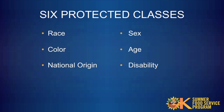The USDA non-discrimination statement contains numerous protected classes which will not apply to all programs. The six protected classes relevant to Oklahoma Child Nutrition Programs, SFSP, remain limited to race, color, national origin, sex, age, and disability.